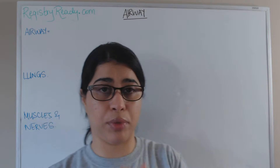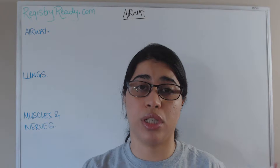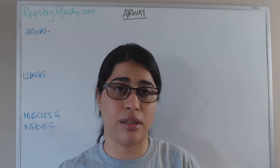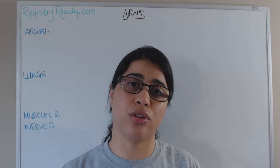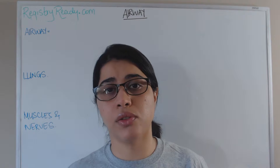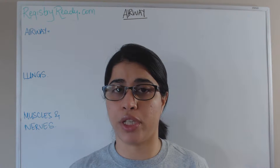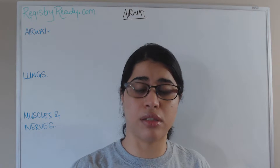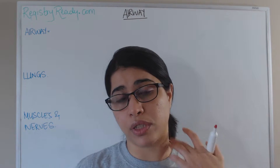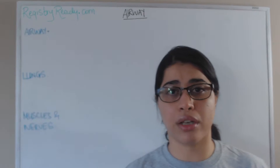Beginning with the anatomy, the structures that help us breathe: the first one would be the airway, which is the passage taking you to the main room which is the lungs, where gases are exchanged. Other structures include the muscles around the lungs and the nerves relaying information to those muscles. The main muscle of respiration is the diaphragm, which gets its information from the phrenic nerve. The phrenic nerve is made up from the cervical spinal nerves C3, C4, and C5.